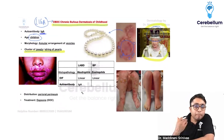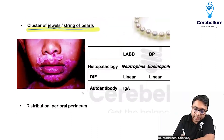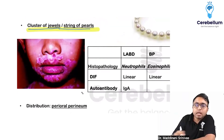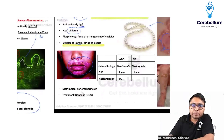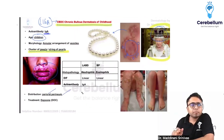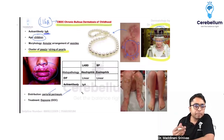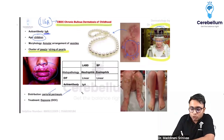These lesions are seen predominantly in the periorifacial areas in CBDC — perioral, perineum, and periorbital areas — all these periorifacial areas will have these characteristic lesions.